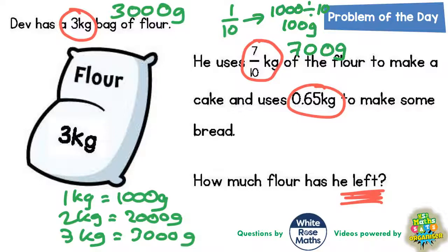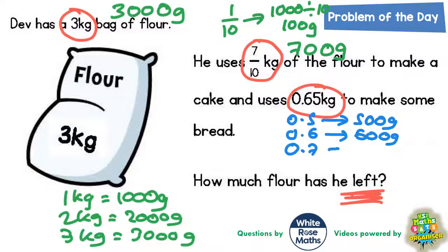So he's using 700g of the flour to make a cake and he uses 0.65kg to make some bread. Well, 0.5kg would be 500g, 0.6kg would be 600g, and 0.7kg would be 700g.